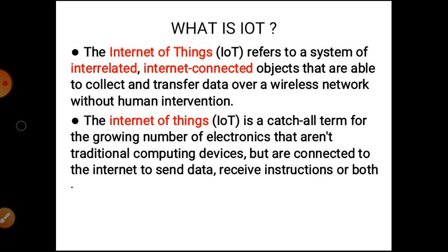In simple words, the Internet of Things refers to a system of interrelated, interconnected objects that are able to connect and transfer data over a wireless network without human intervention. The Internet of Things is a catch-all term for a growing number of electronics that aren't traditional computing devices but are connected to the internet to send data, receive instructions, or both.